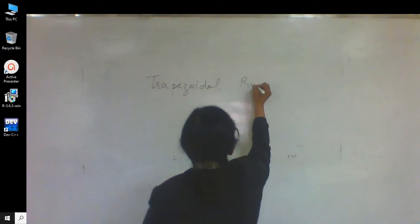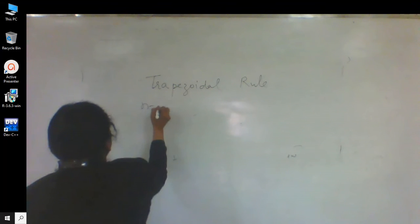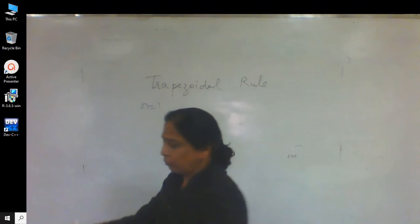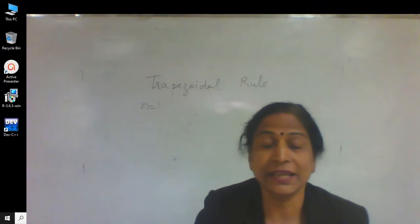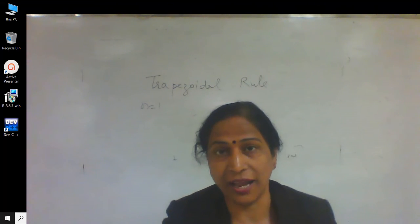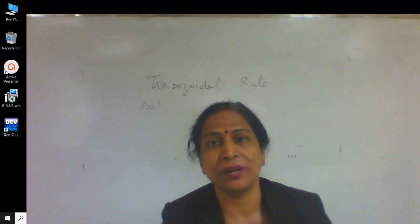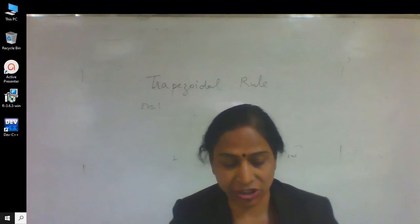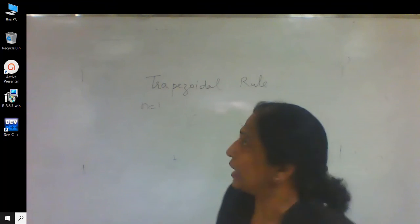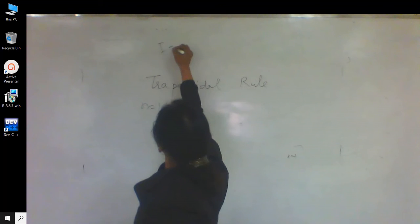Trapezoidal Rule: while putting n equal to 1 — we need to put n=1 in the general quadrature formula derived in our last lecture. Let us recall what we had obtained from that general quadrature formula.